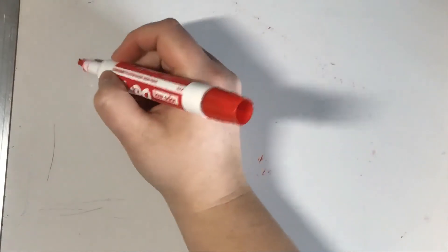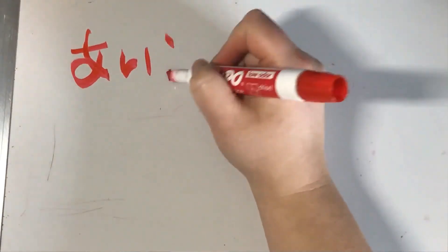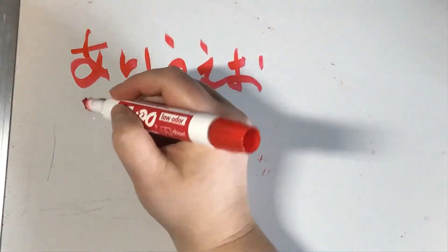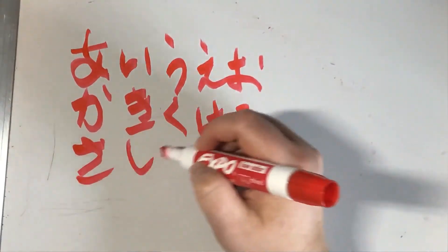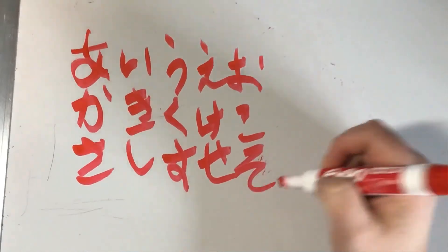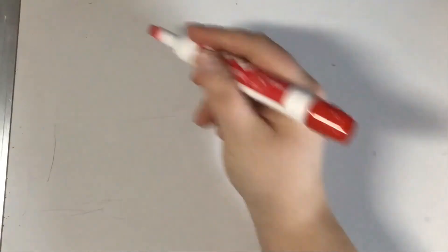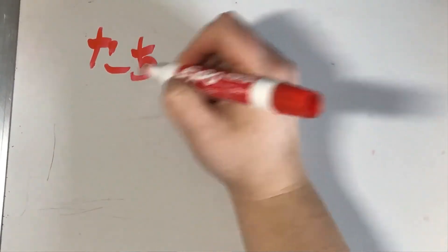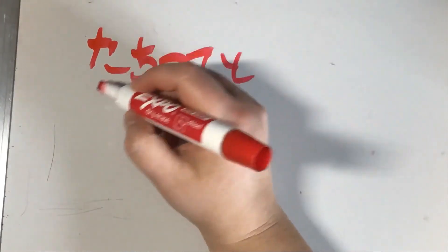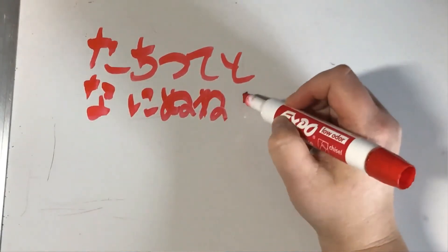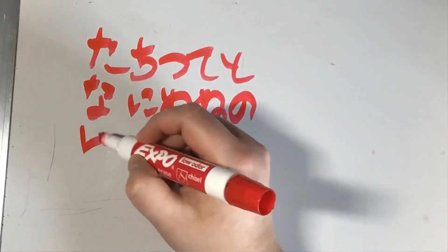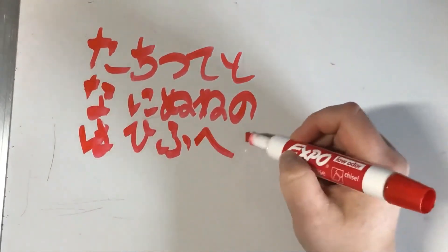Let me give a full review of all 30 characters we've learned so far: a, i, u, e, o; ka, ki, ku, ke, ko; sa, shi, su, se, so; ta, chi, tsu, te, to; na, ni, nu, ne, no; and ha, hi, fu, he, ho.